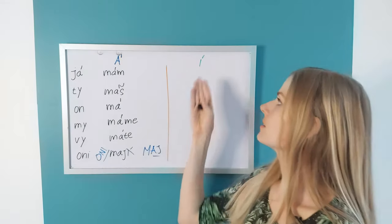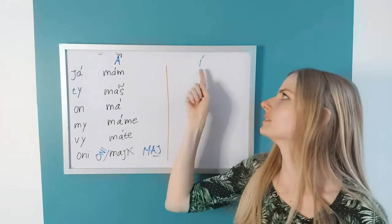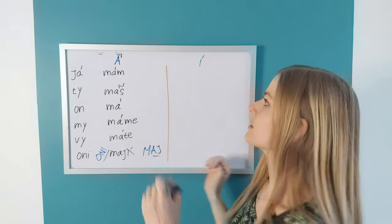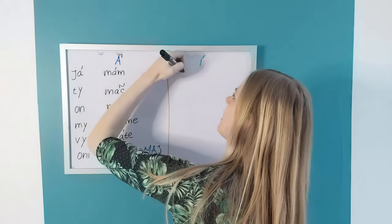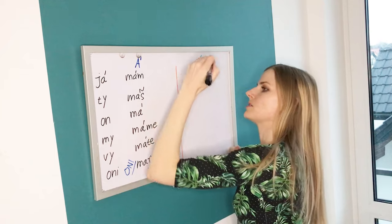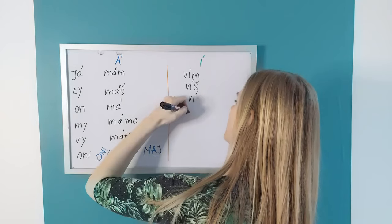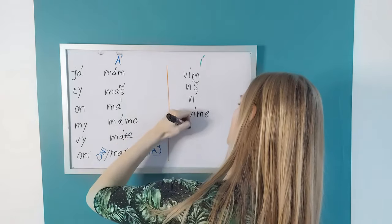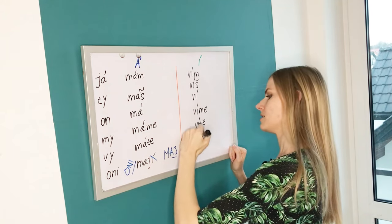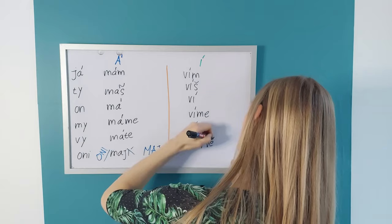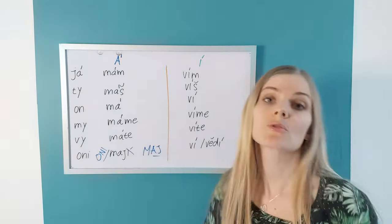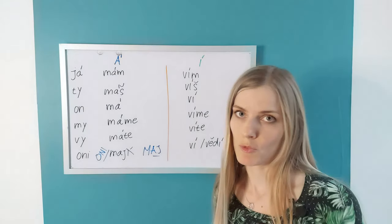Now let's look at the second group. The green group or the E group. For example the verb to know, vědět. Standard Czech would be já vím, ty víš, on ví, my víme, vy víte, oni ví or also vědí. This one has two forms. In this group, two forms would be different in common Czech.